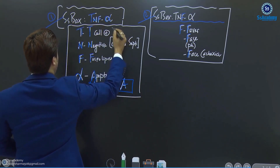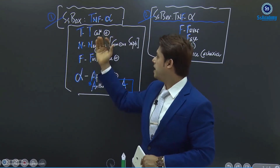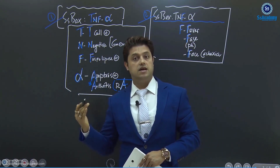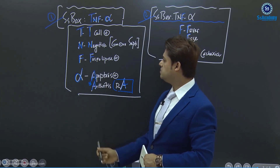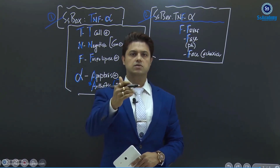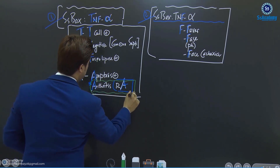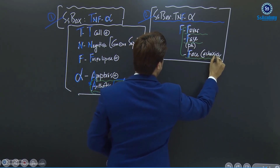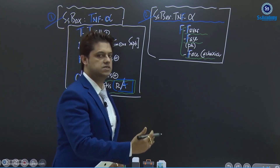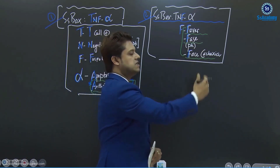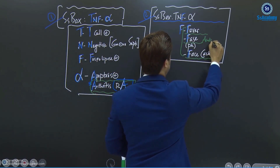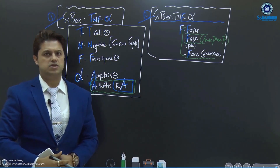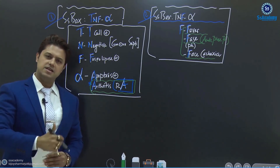Once again: TNF-alpha — T for T cell activation, N for gram-negative septicemia, F for phospholipase activation with anti-tumor effects. Alpha for apoptosis and rheumatoid arthritis. And the three F's: fever, phase (acute phase proteins), and phase cachexia — the systemic effects. These two boxes are really important for the exam. I hope you enjoyed. Thank you very much.